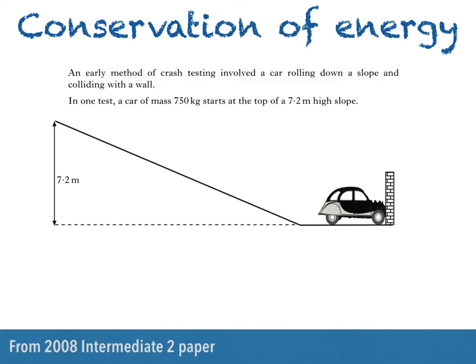Here's a question from the 2008 Intermediate II paper. An early method of crash testing involved a car rolling down a slope and colliding with a wall. In one test, a car of mass 750 kilograms starts at the top of a 7.2 meter high slope. So basically, it starts off here, accelerates down the slope, then crashes into the wall like so.